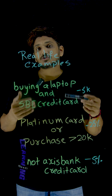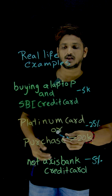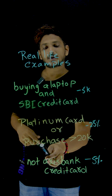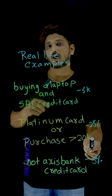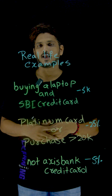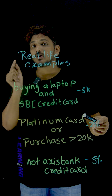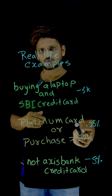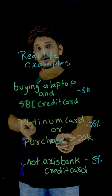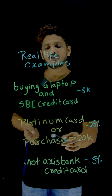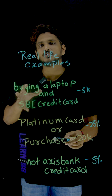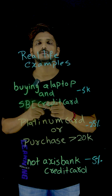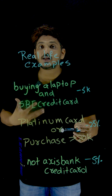Similarly, the next operator: sometimes we see offers like this. If you are a platinum card holder, or if you are purchasing more than 20K value of items online, either any one of the conditions has been met. If you are a platinum card holder and it is true, or if you are purchasing more than 20K and it is true, then this entire condition has to be considered as true. Then only you can provide a 25% discount. So OR is a logical operator.